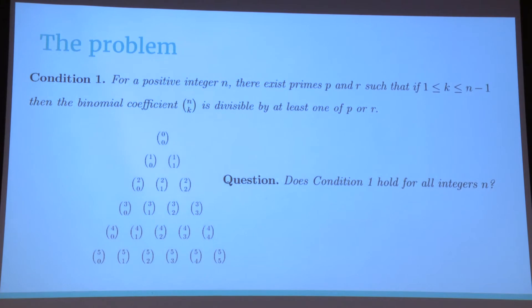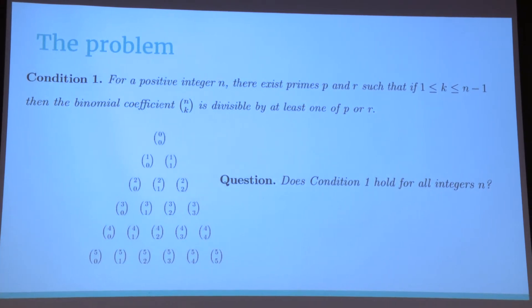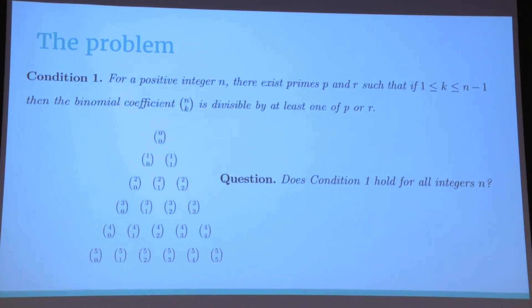This means that if n satisfies condition 1, the nth row of Pascal's triangle is painted with two primes. Now, the question is, does condition 1 hold for all integers n? Are all the rows of Pascal's triangle painted? This is an open problem in number theory. And what we have been doing these past weeks was try to prove as many cases as we could in which n satisfies this condition.